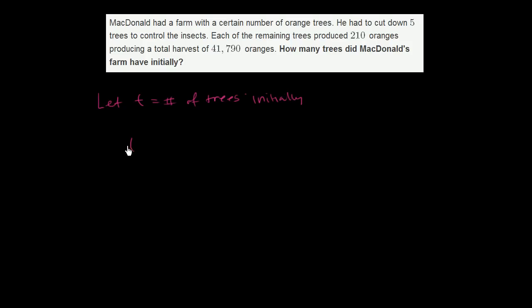So he starts off with t trees, but then they tell us that he has to cut down five trees to control the insects. So how many trees would he have after that? Well, he started with t, and he had to cut down five. So he's going to have t minus five trees now.